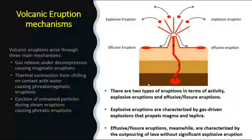There are three main mechanisms through which magma comes out. First, gases released under decompression cause magmatic eruptions — entrapped gases come out and through the decompression process the magma also comes out. Second, thermal contraction from chilling on contact with water causes phreatomagmatic eruptions, which happens in the oceans when magma directly contacts cold water. Third, ejection of entrained particles during steam eruptions causes phreatic eruptions.